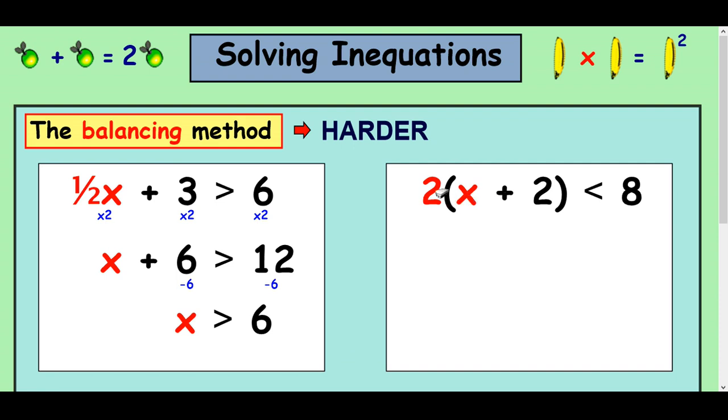Okay, again, when you saw brackets in equations, what you did was you multiplied them out. And I'm going to do exactly the same thing here. I'm going to multiply the bracket out. So remember, it's 2 times x and then 2 times 2. Okay, so that's going to give us 2x add 4 is less than 8.